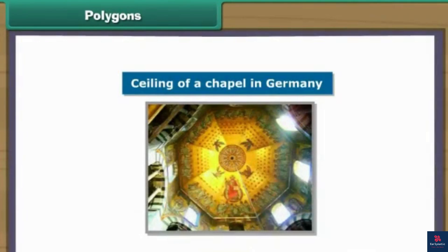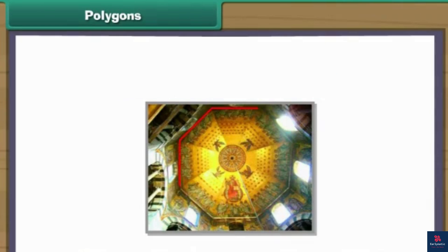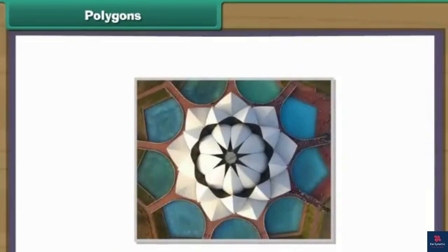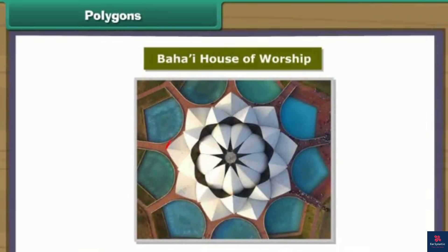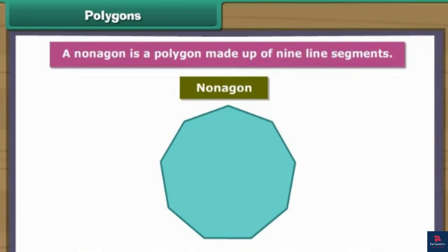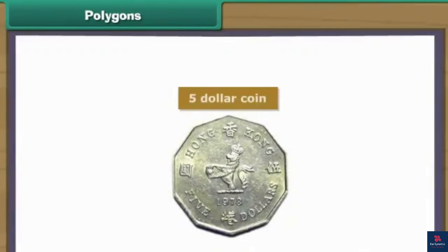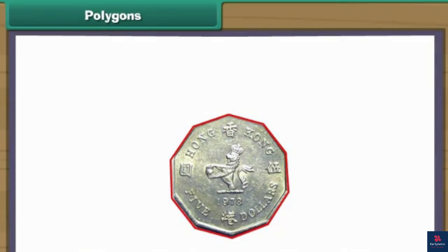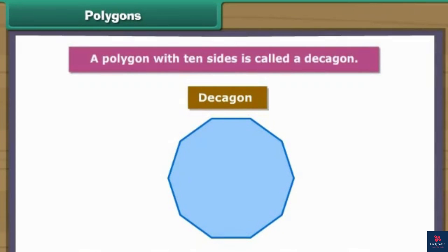This is the image of the ceiling of a chapel in Germany. It has eight sides. An octagon is an eight-sided polygon. Look at this image — it is the Baháʼí House of Worship. All Baháʼí Houses of Worship have nine sides. A nonagon is a polygon made up of nine line segments. Here is an old five-dollar coin from Hong Kong. It has ten sides. A polygon with ten sides is called a decagon.